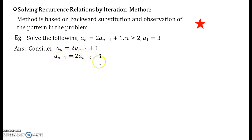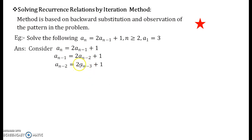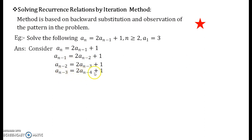Again, take this newest equation and replace n by n minus 1 again. On the LHS n is replaced by n minus 1, so you get aₙ₋₂, and on the RHS you get 2aₙ₋₃ plus 1 — the constant terms 2 and 1 remain as they are. Once more, replace n by n minus 1 in the newest equation and you get aₙ₋₃ = 2aₙ₋₄ + 1.